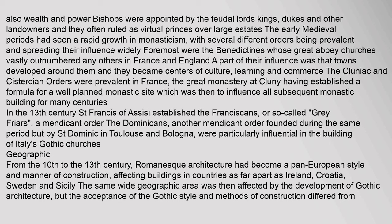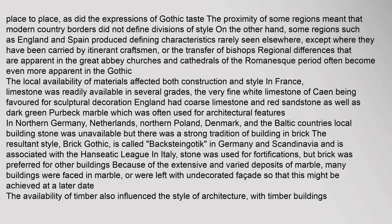From the 10th to the 13th century, Romanesque architecture had become a pan-European style, affecting buildings in countries as far apart as Ireland, Croatia, Sweden and Sicily. The same wide geographic area was then affected by the development of Gothic architecture, but the acceptance of the Gothic style and methods of construction differed from place to place, as did the expressions of Gothic taste. The proximity of some regions meant that modern country borders did not define divisions of style, while some regions such as England and Spain produced defining characteristics rarely seen elsewhere.